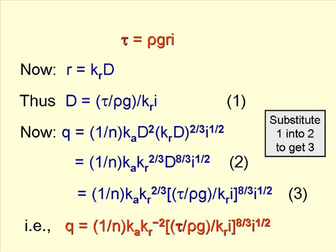Writing r as k_r D in this equation and rearranging gives us the following equation for D. D is equal to τ over ρg, all divided by k_r i. We'll call this equation one.